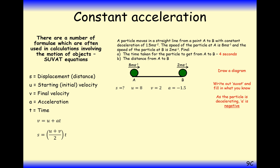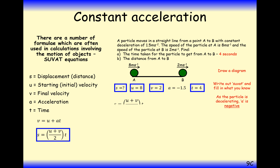Now replace T with the value 4 in your SUVAT expression. Then to find the distance, use the other formula: S equals (U + V) divided by 2 times T. Substituting in all the numbers and we get 20. So the distance travelled here is 20 metres.